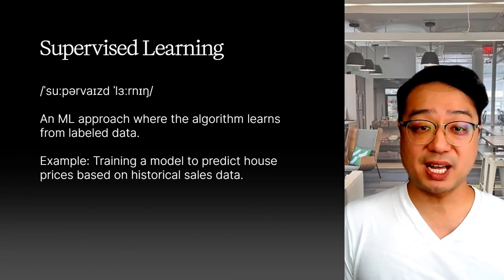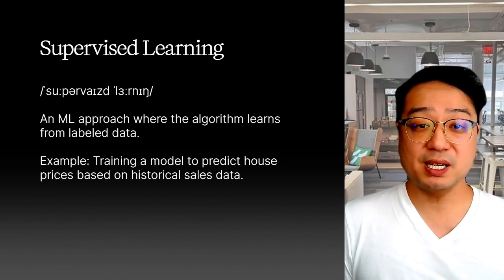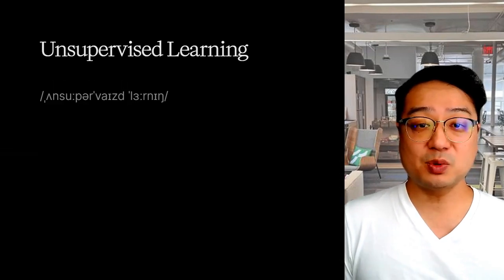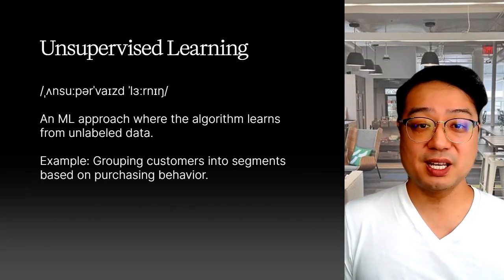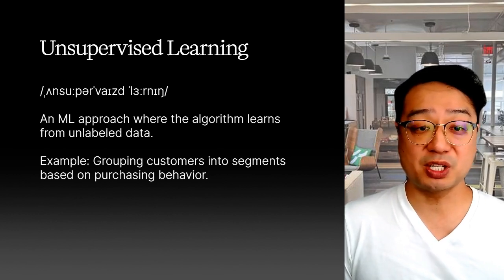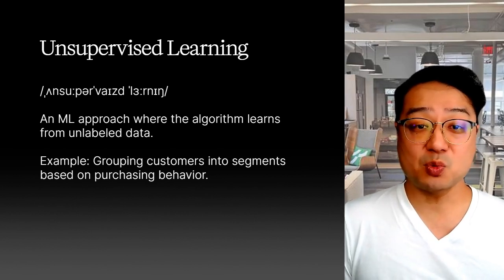There are different ways to teach AI. One way is supervised learning, where we give the AI labeled data — meaning we tell it the correct answer. It's like teaching a child by showing them a flashcard with the word 'apple' written under a picture of an apple. Another way is unsupervised learning, where we give the AI unlabeled data and let it find patterns and relationships on its own — like giving a child a box of Legos and letting them build whatever they want.